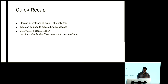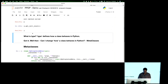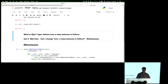Let me do a quick recap. Class is an instance of type. Type is the holy grail — the base of everything we do in Python. Type can be used to create dynamic classes. You can further have objects which are instances of the class that is created. We also saw the lifecycle. Now, what can I really do with type? By modifying something in type, I can change the behavior of classes. Since type is native we can't change it directly, but we can subclass type — and that is what we call metaclasses.